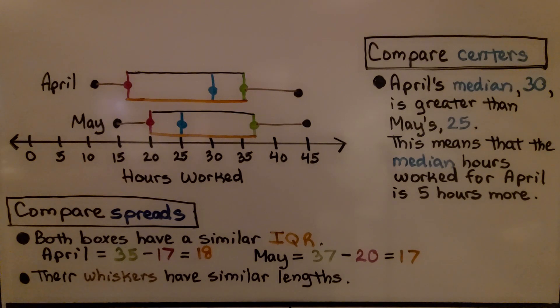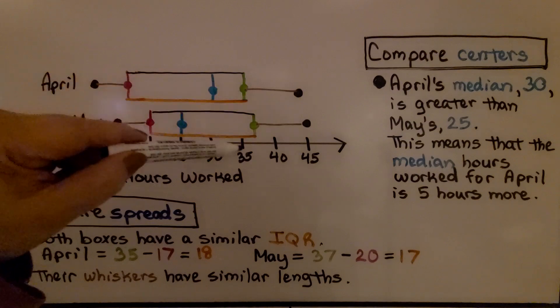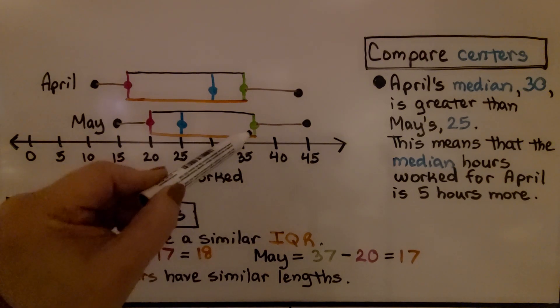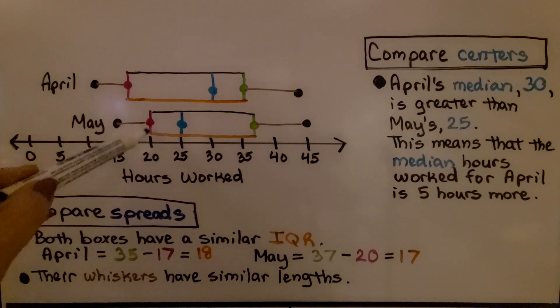April would be 35 minus 17, which gives us an IQR of 18, an interquartile range of 18. May is 37 minus 20, that gives us an IQR of 17.